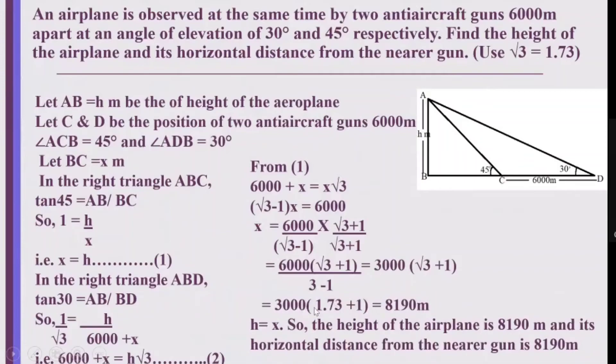I put 3,000 into 1.73 plus 1 which is 3,000 into 2.73 which comes out to be 8190 meters. So, X comes out to be 8190 meters. H is also equal to X. So, I get the height of the airplane is equal to 8190 meters and its horizontal distance from the nearer gun is 8190 meters.